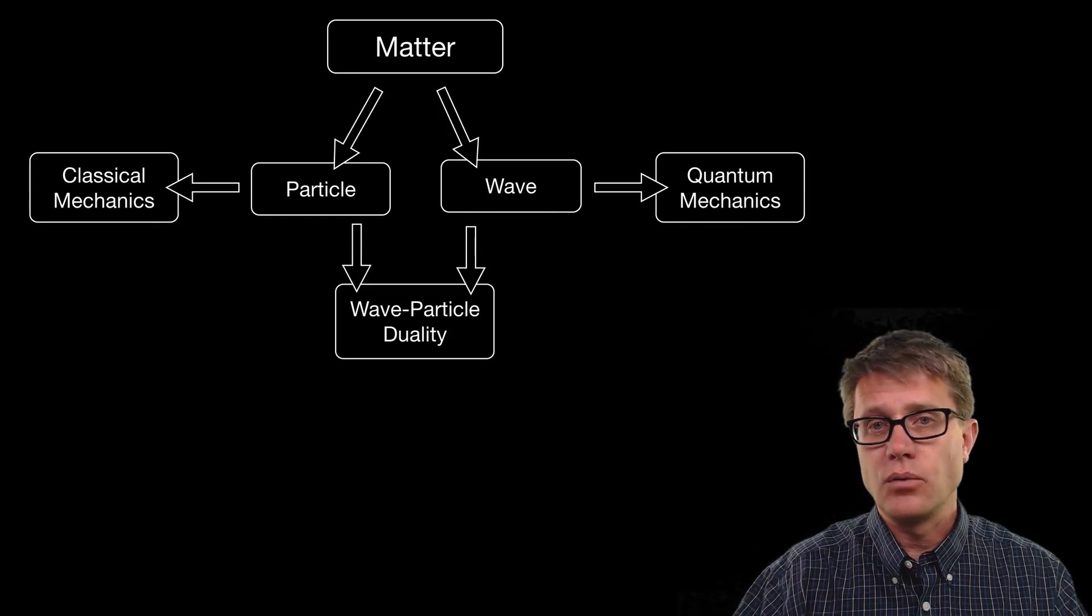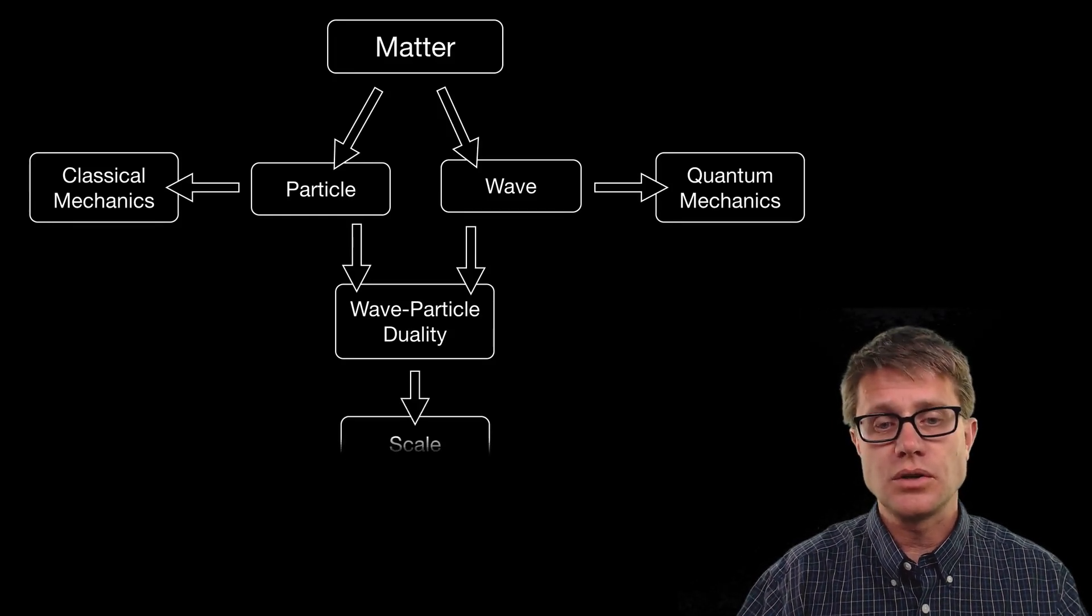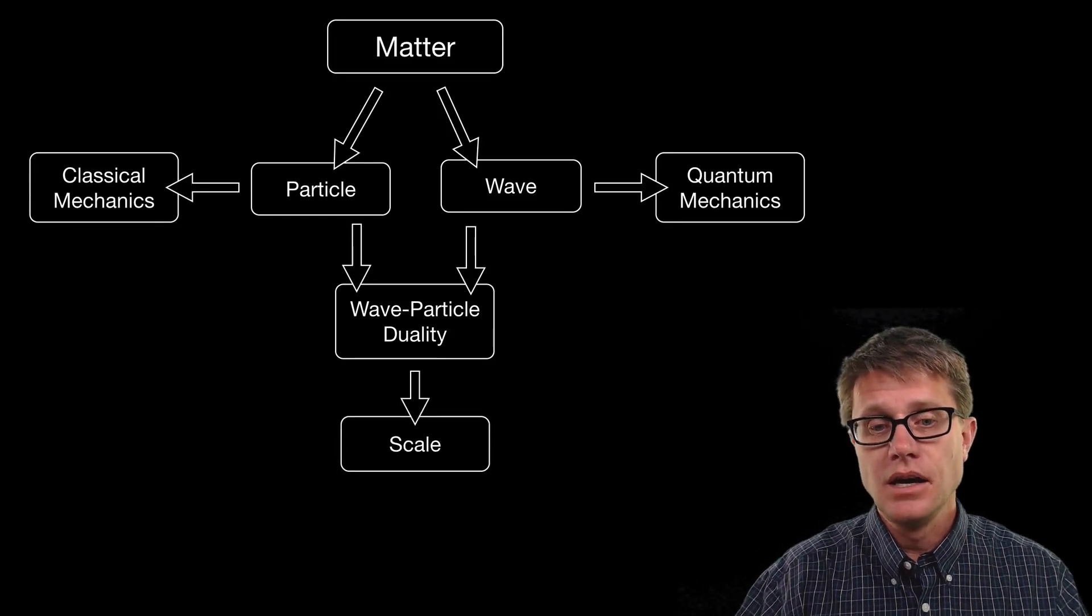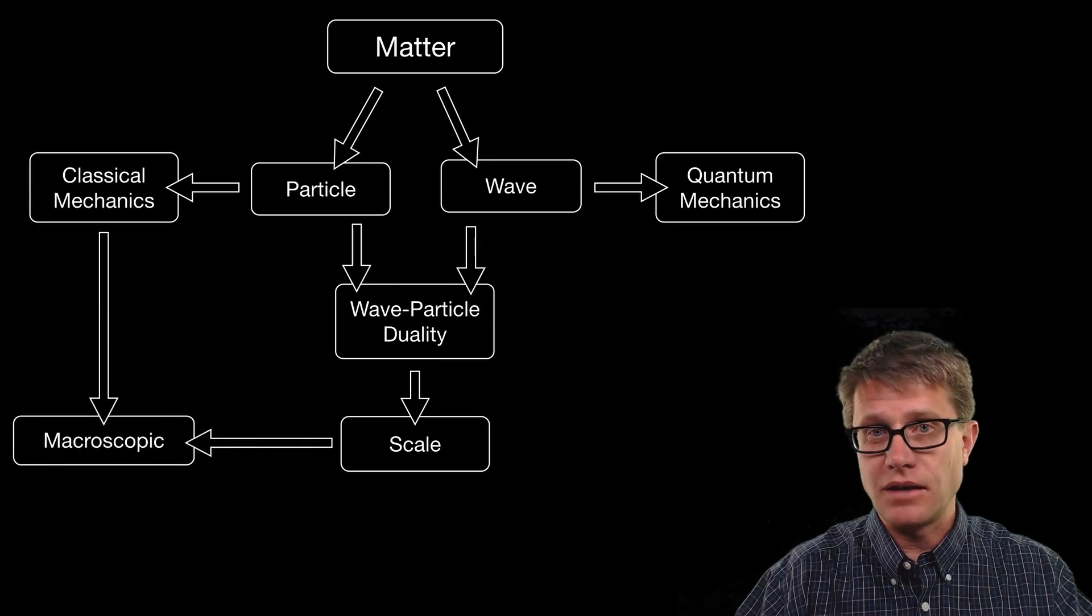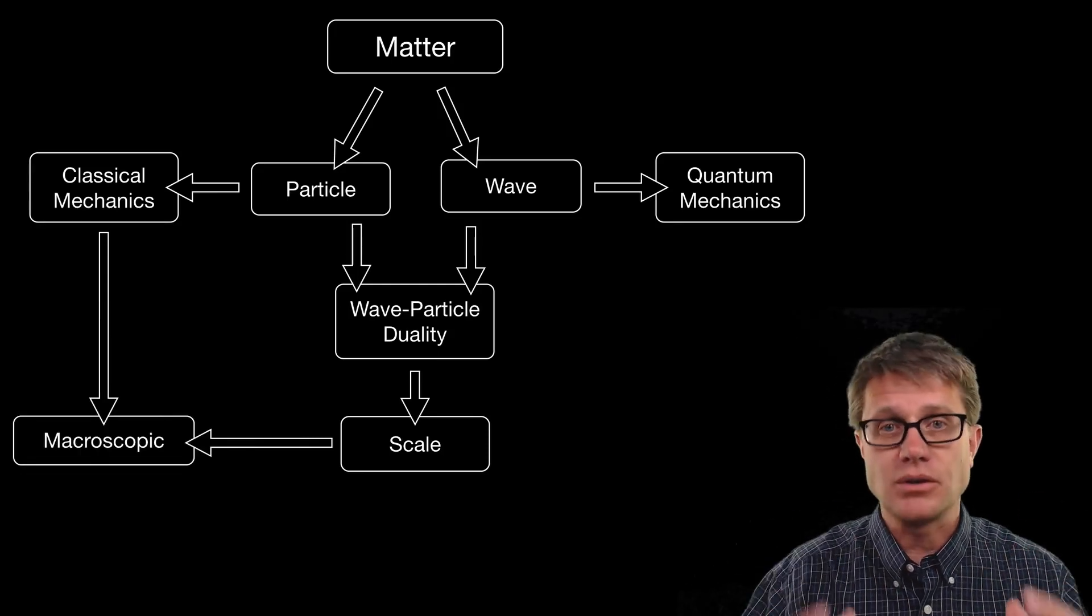But how do we know, just like light, which kind of a model should we use? It all comes down to scale. If we are dealing with the macroscopic, so this is everything that is even, you know, microscopic, then it is going to be classical mechanics.